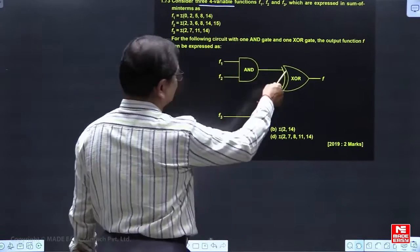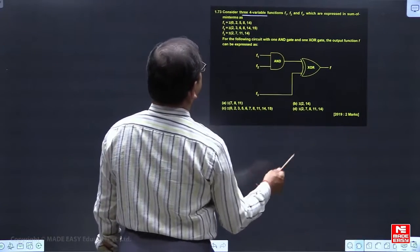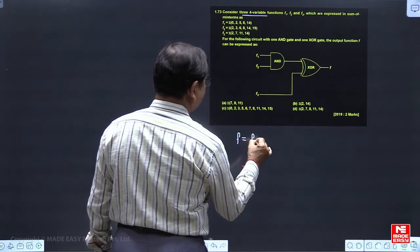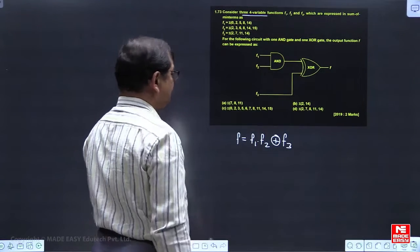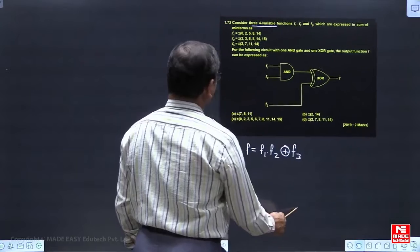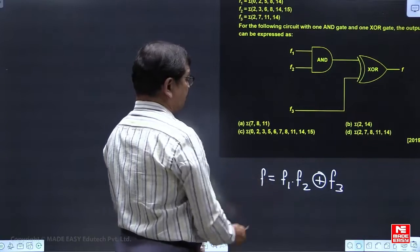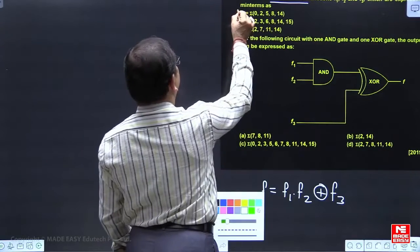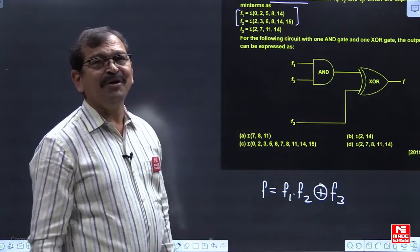So from this given circuit, we are having possibility to say, f is basically f1 AND with f2 exclusive OR with f3. Now, from the given data, we are looking f1 AND with f2. This is the AND operation between this f1 and f2. Whenever we are having AND operation between f1 and f2, only the common minterms will be present.